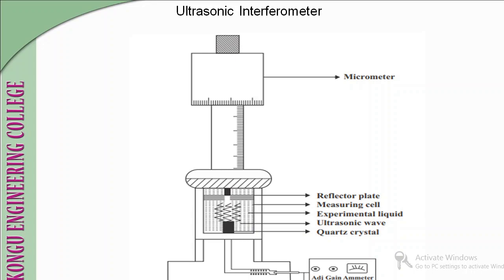By changing the position of the reflector plate, we can determine the velocity of ultrasonic waves. The reflector plate is connected with the micrometer screw, and if we rotate the head scale of the micrometer screw anticlockwise, we can make the reflector plate move upwards. The frequency generator provides the alternating electric field to the piezoelectric crystal in the base of the ultrasonic interferometer.